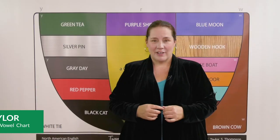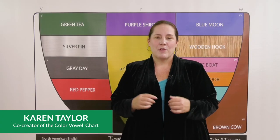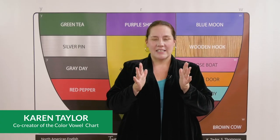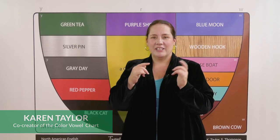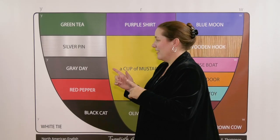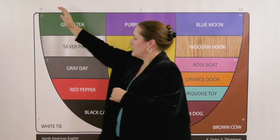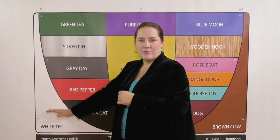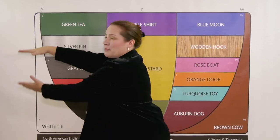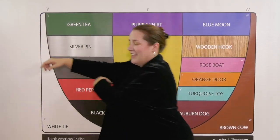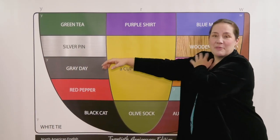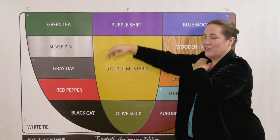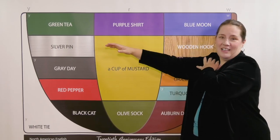The shape of the color vowel chart represents the inside of your mouth in profile. This is the front of your mouth where your lips are, and this is the back of the mouth where your tongue is anchored.